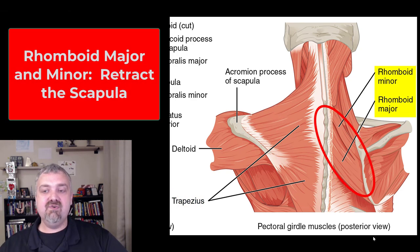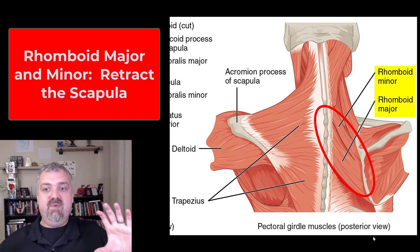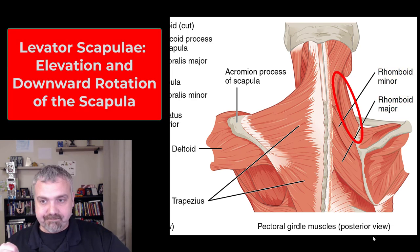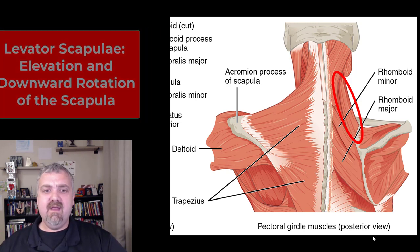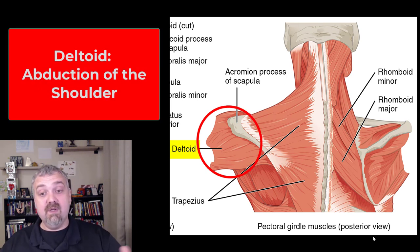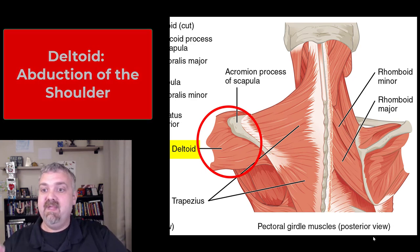Then we have the rhomboid major and minor, named after their rhomboid shape for those who remember their math. Their job is also to retract the scapulae — squeezing the two shoulder blades together. The levator scapulae elevates the scapulae and also produces downward rotation. And on the left you can see the deltoid, shaped like a triangle, which is where the name comes from. Its job is to abduct the shoulder, bringing your arms up away from your body.